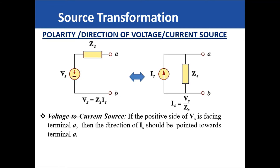In our transformation process, we need to be careful about the polarity of the voltage or the direction of the current. For example, if we are trying to transform a voltage source into a current source, take note that the current source here is directed towards terminal A. The guide here is to look at the polarity of the voltage on the original circuit. Here the plus sign is connected to terminal A through the impedance Zs, so we need to direct the flow of current towards terminal A.